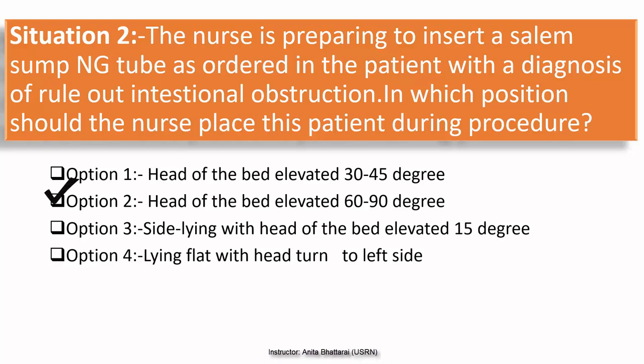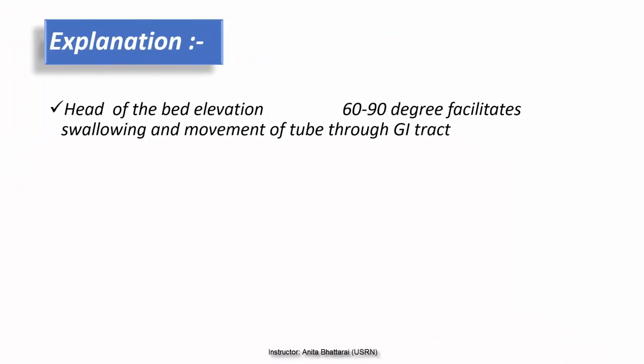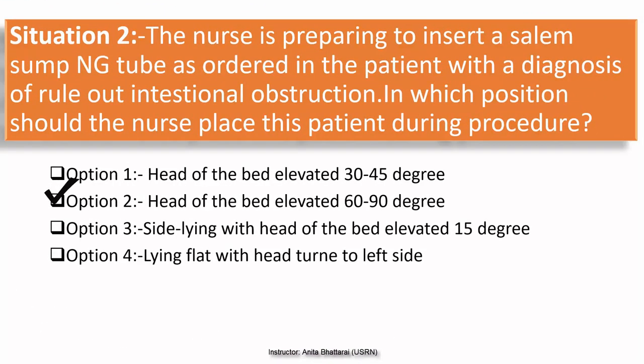The correct option is head of the bed elevated 60 to 90 degrees. Elevating the head of the bed to 60 to 90 degrees facilitates swallowing and movement of the tube through the GI tract, enabling easy passage of the tube. The 30 to 45-degree elevation in Option 1 is too low for this procedure. Option 3, side-lying, is not a proper position for inserting an NG tube, and Option 4 — lying flat with head turned to the left — is also not appropriate. Therefore, 60 to 90 degrees is correct for easy tube passage.